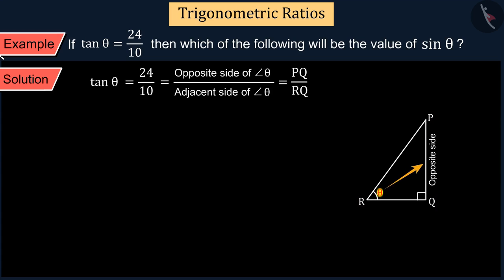PQ is the opposite side and RQ is the adjacent side of the angle, which we can also write in this way, where x is a positive number.